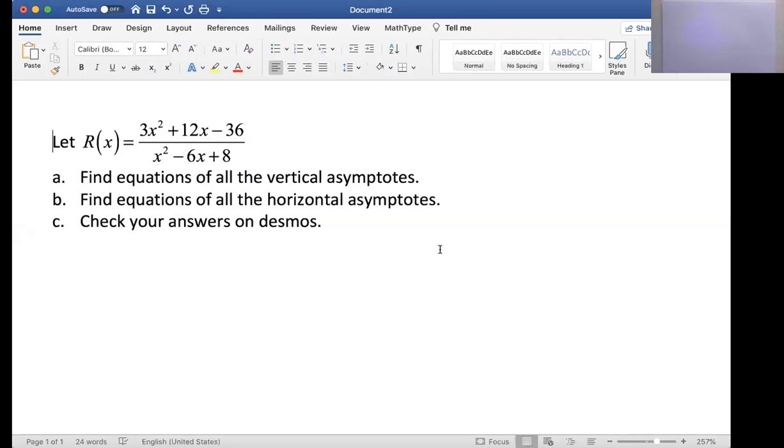This question gives us a rational function 3x squared plus 12x minus 36 divided by x squared minus 6x plus 8. We want to find the equations of all the vertical asymptotes and the equations of all the horizontal asymptotes.